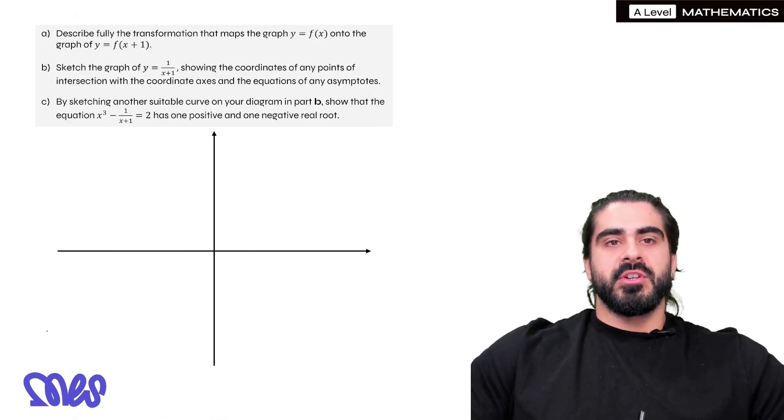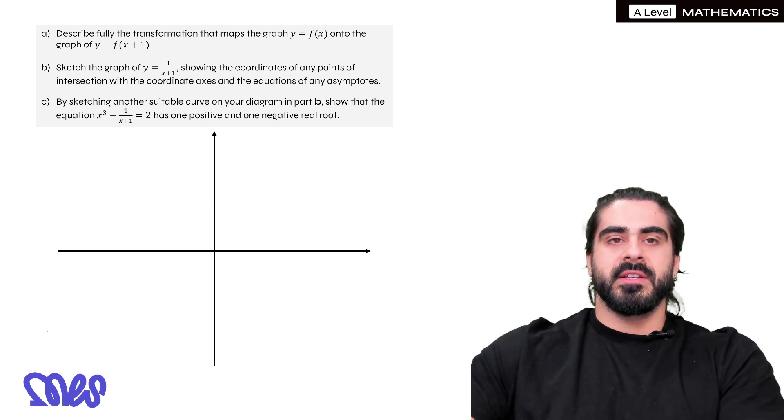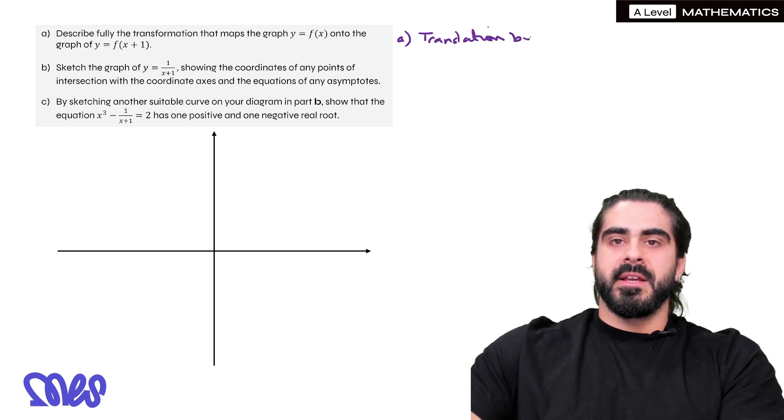Next question. Describe fully the transformation that maps the graph of y = f(x) onto the graph of y = f(x+1). So that's shifting the graph to the left by 1. So it's a translation by the vector (-1,0).